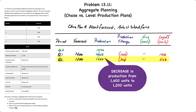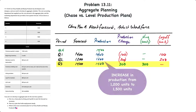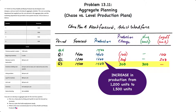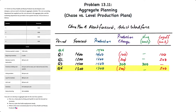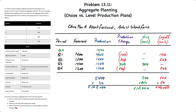Quarter three production and forecast are 1500 units, resulting in an increase of 300 units from the previous quarter, which means the company will need to hire additional workers to produce 300 equivalent units. In quarter four, forecast and production are 1300 units — a drop of 200 units from the previous quarter — resulting in 200 units worth of layoffs.